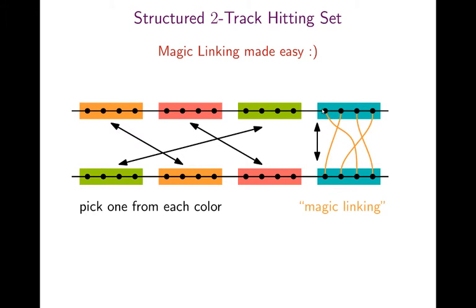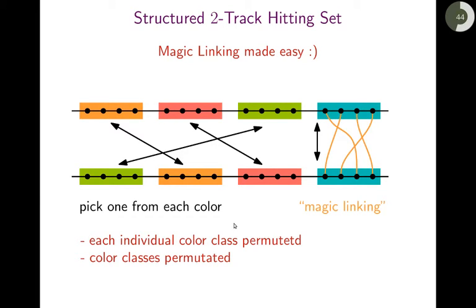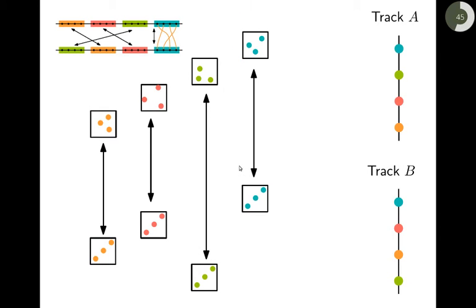And then certain classes here are connected, so this green with this green, this red with this red, this orange with this orange, and the turquoise with turquoise. And the magic linking takes place only between any two elements on the same color. So there would be a magic link between these two turquoise, or between any of these red and any of the orange. And we can show that this problem is still W1 hard and has this lower bound under the exponential time hypothesis. And now, yeah, when I pick this element here, I have to pick that element as well.